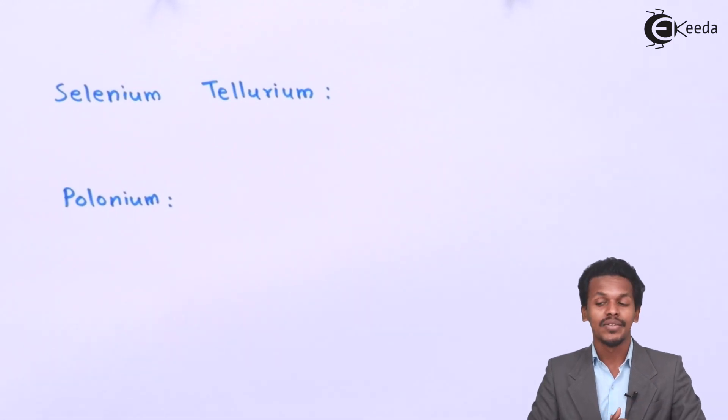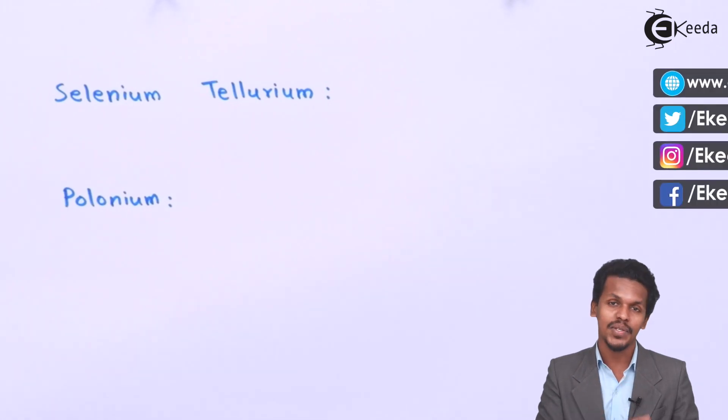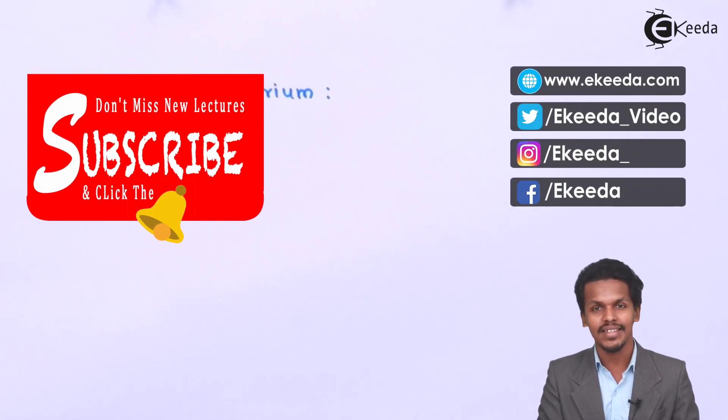This was related to the occurrence of Group 16 elements as well as the percentage and quantity of those elements present on the Earth's crust. Thank you friends for watching this video. I hope you have understood this video very clearly and I hope I will see you next time. Till then don't forget to subscribe to the Ikeda Channel. Thank you so much.